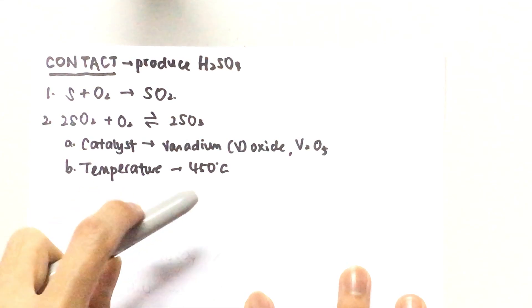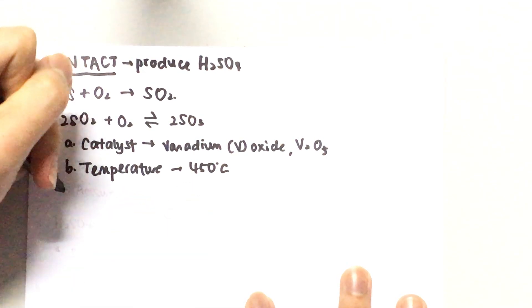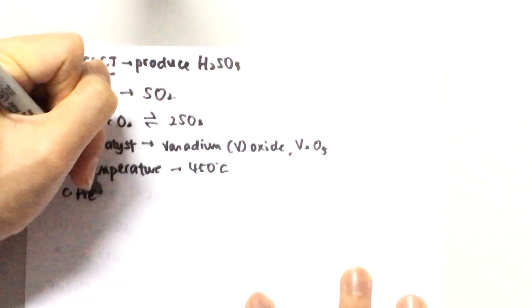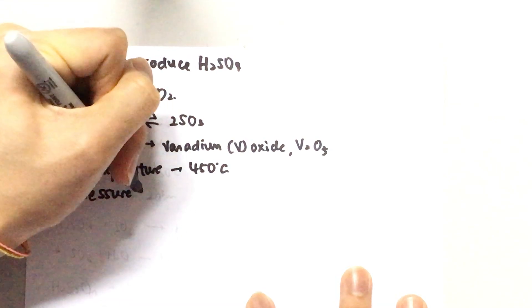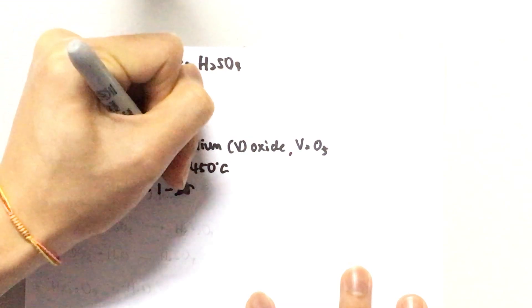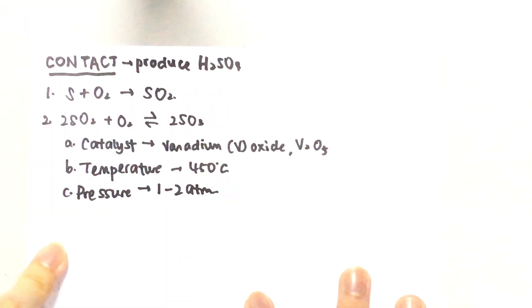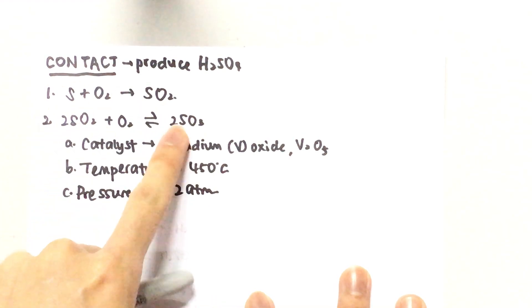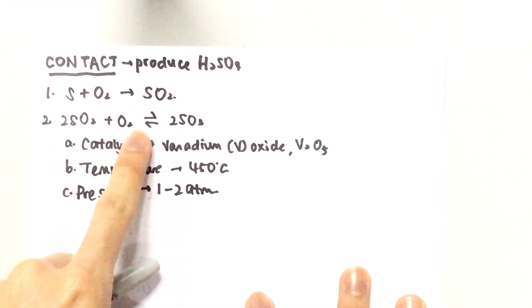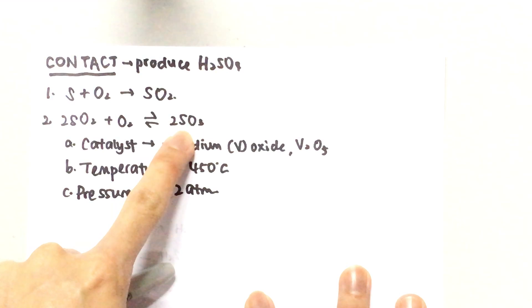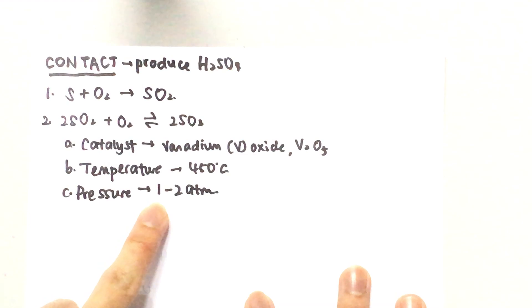Last but not least is the pressure. If you look at this equation, the left side has more molecules than the right side, so a high pressure would actually favor the forward reaction. But this reaction is already having a very good yield at normal atmospheric pressure or 1 to 2 atm, so that's why we don't have to use too high pressure because high pressure comes at a higher cost for maintenance as well.